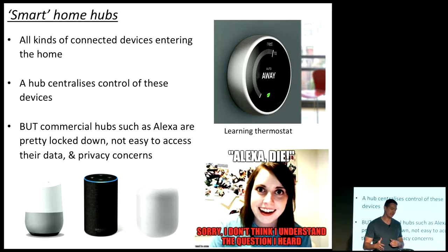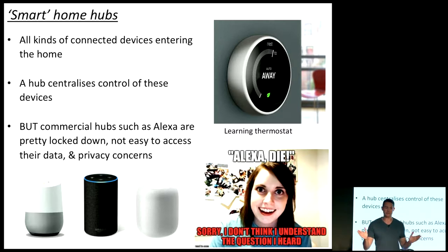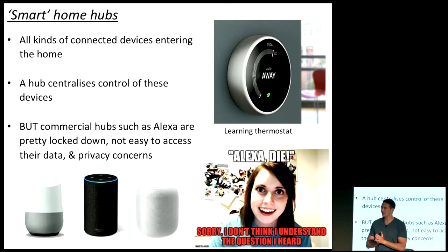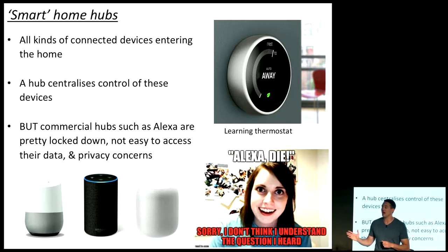Typically, people start buying these things and their home maybe starts filling up with a few of them. What they really want is a hub to centralize control of all those different devices. You've got a few commercial ones out there — the obvious one is Amazon Alexa. There's also Google Home, and Apple have released their smart pod speaker, which is a smart home hub as well. These are great services, great toys. But they're a bit limited in terms of how you can actually access the data they're capturing — you have no way of actually getting to it. They've also got privacy concerns. There was a recent article where Alexa inadvertently sent somebody's private conversation over the web and it ended up in somebody else's home.